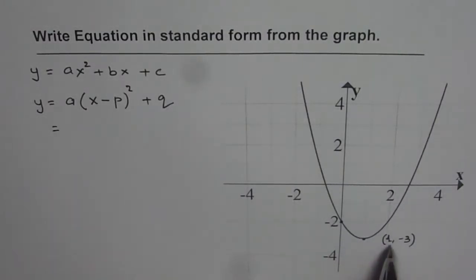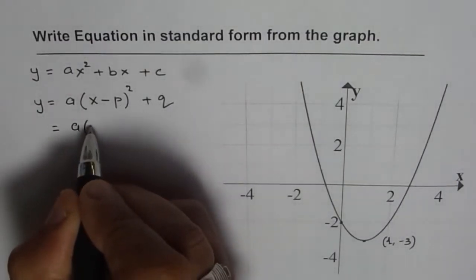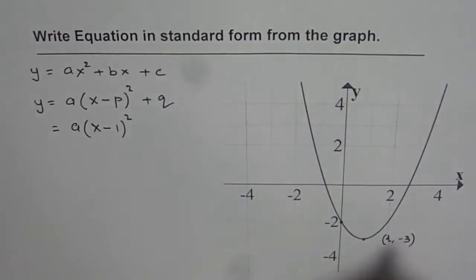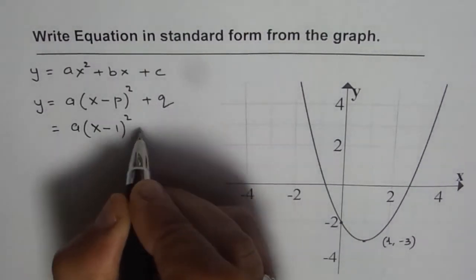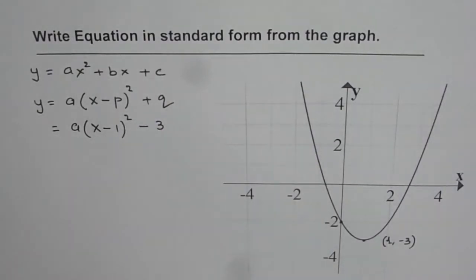p and q values are 1 is for p and q is -3. So let us first write in p and q: (x - 1)² plus q means q is -3. So we will get value of -3 here.